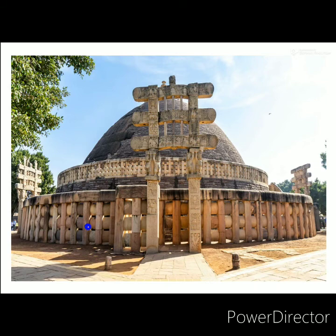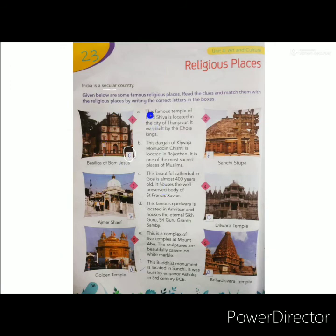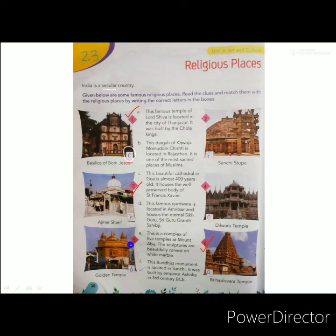Now let's complete the answers for this page. The first answer is the Brihadeswara Temple — write answer A in the box below the sixth picture. The second is Ajmer Sharif — write answer B below the third picture. The third is the Basilica of Bom Jesus — write answer C below the first picture. The fourth is the Golden Temple — write answer D below that box. The fifth is the Dilwara Temple — write answer E below the fourth picture. The last is Sanchi Stupa — write answer F below the second picture. Students, complete this page and learn all the questions and answers to prepare for the exam.